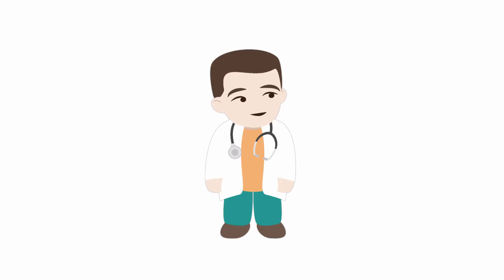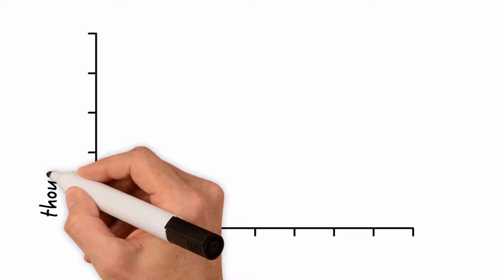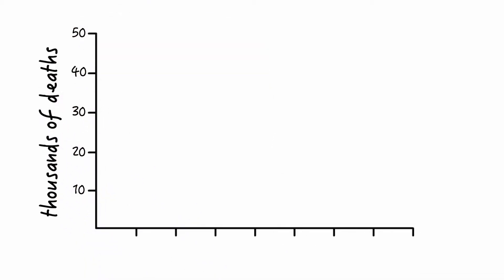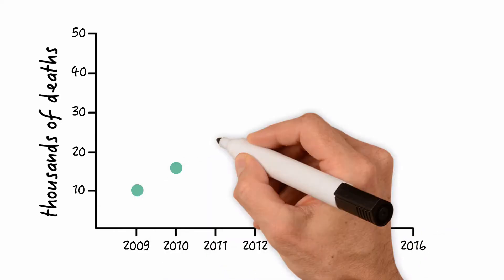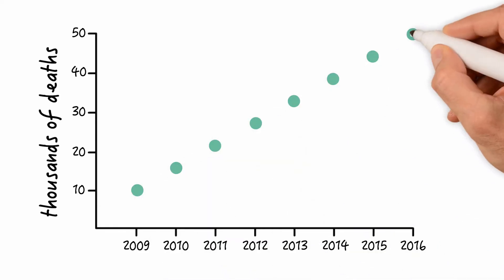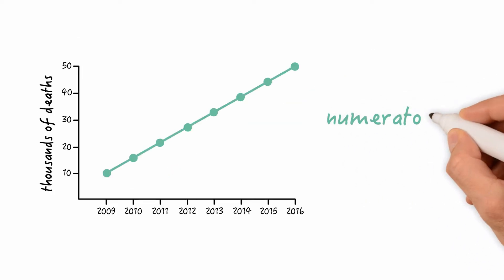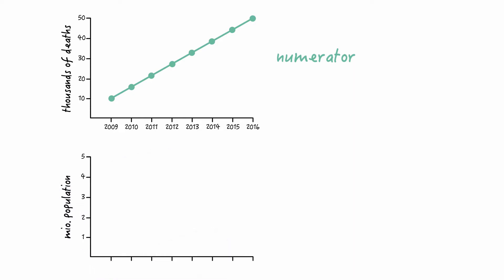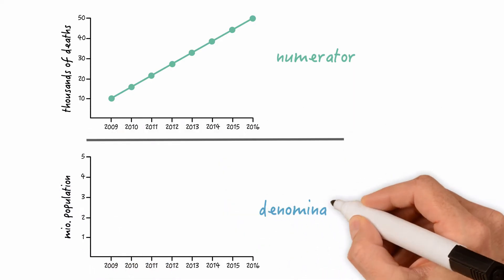Let's have a quick look at how epidemiologists measure mortality. Here are the absolute numbers of deaths for a certain disease over time. From looking at this graph we cannot tell if the risk of dying from that disease increased over time. For that we would need to know the death rates, and we only have the numerator for these death rates. We don't have the numbers of the total population during these time points — in other words, we don't have the denominator.